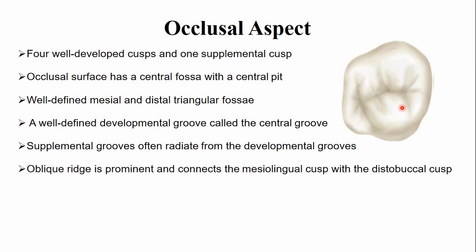A unique feature of this tooth is the prominent oblique ridge, which crosses the occlusal surface from the mesiolingual cusp to the distobuccal cusp. It is a raised linear elevation that is a defining characteristic of the maxillary deciduous second molar.